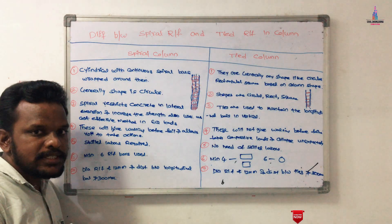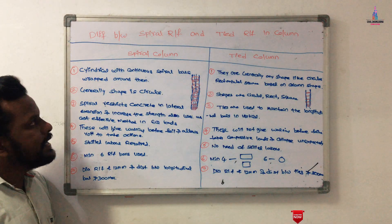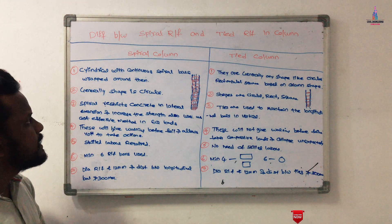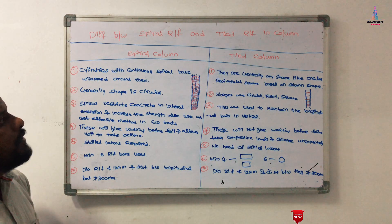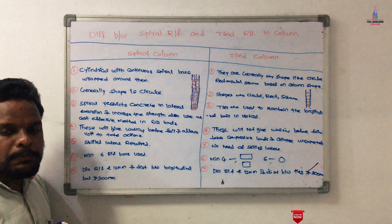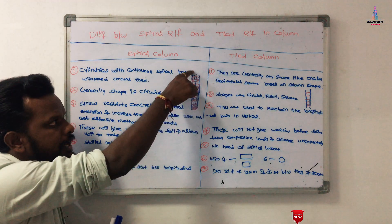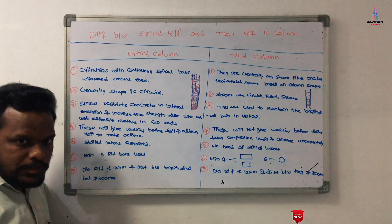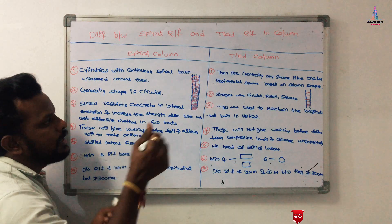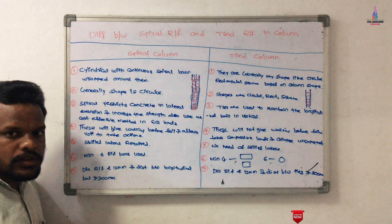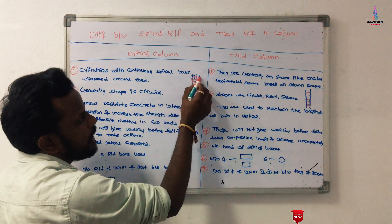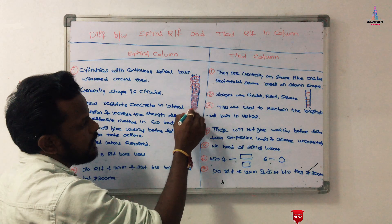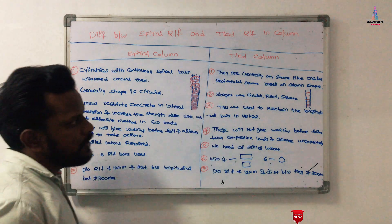The first difference: in a spiral reinforcement column, the cylindrical reinforcement bars are provided with continuous spiral bars wound around them. The main reinforcement bars are kept in position by using a continuous spiral bar — shown here in red — which is wound around the vertical reinforcement bars.